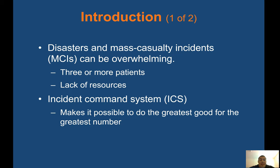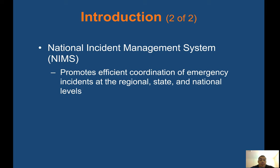Introduction. Disasters and mass casualty incidents, or MCIs, can be overwhelming — three or more patients, lack of resources. The Incident Command System, or ICS, makes it possible to do the greatest good for the greatest number. The National Incident Management System, or NIMS, promotes efficient coordination of emergency incidents at the regional, state, and national levels.